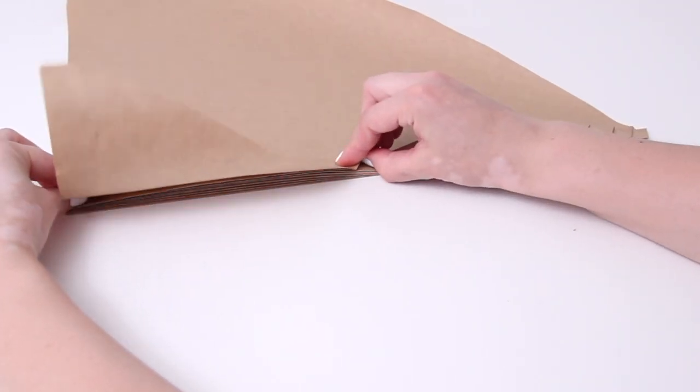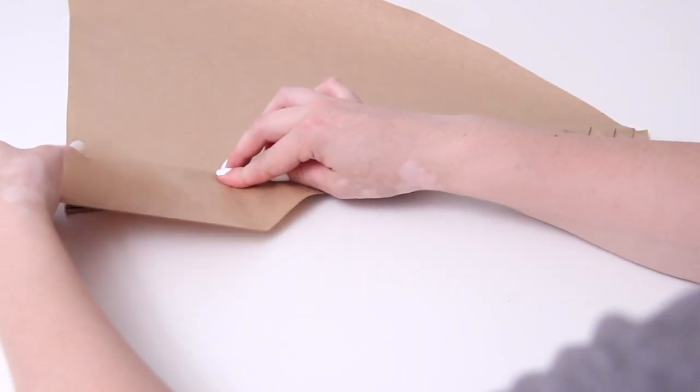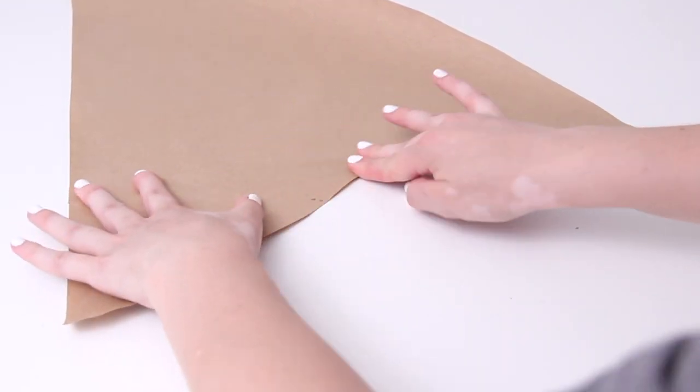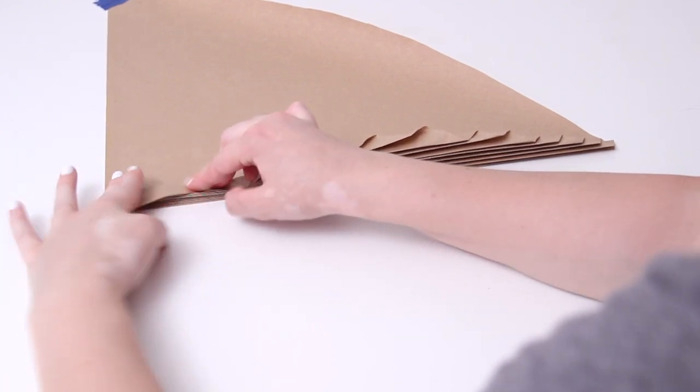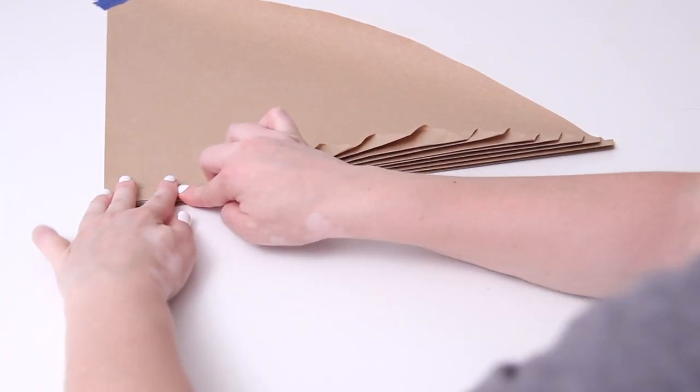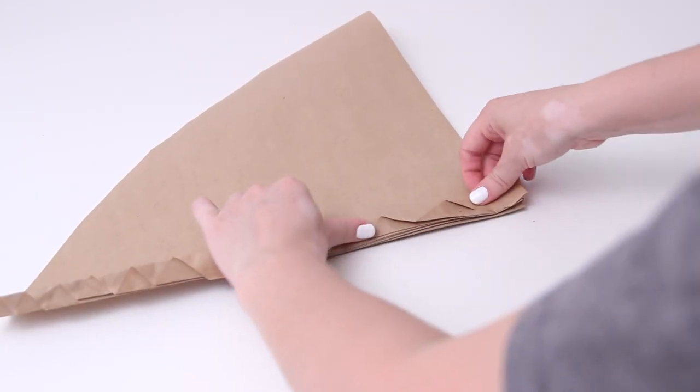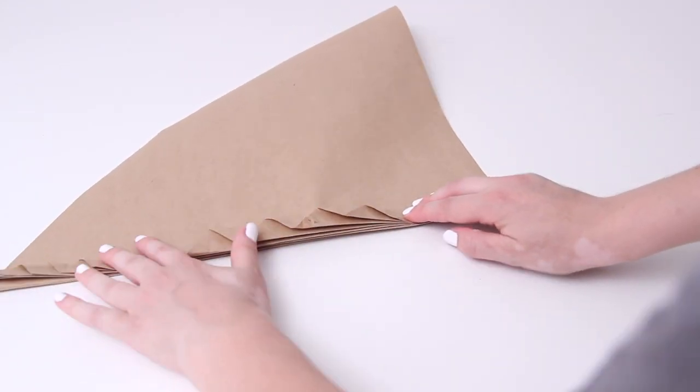So just continue folding this side until you get to the end of the piece of paper. And then once you do, you can pick it up and start to work on the other side following this same pattern. So just start folding it back and forth in this accordion or fan shape until you reach the end of the other side of your paper.